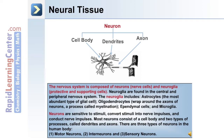Neurons, as depicted in this image, are sensitive to stimuli. They convert stimuli into nerve impulses and conduct them. Most neurons consist of a cell body or soma, dendrites which receive information, and an axon which transmits information from the cell body.